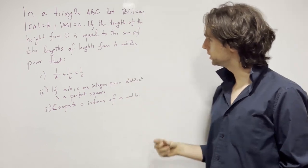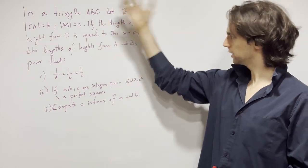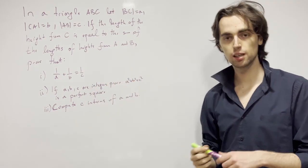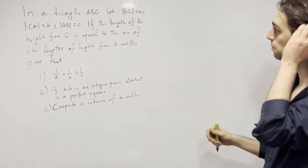So we're triangle ABC, we're given these side lengths and we have the length of the height from C is equal to the sum of the lengths from heights of A and B.